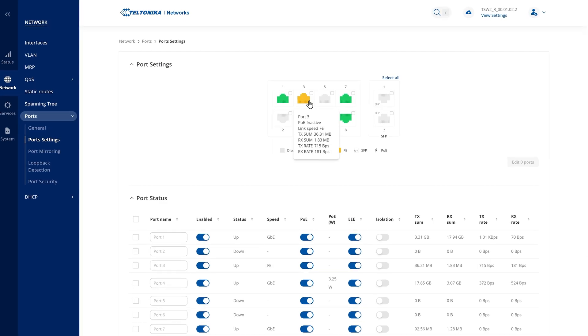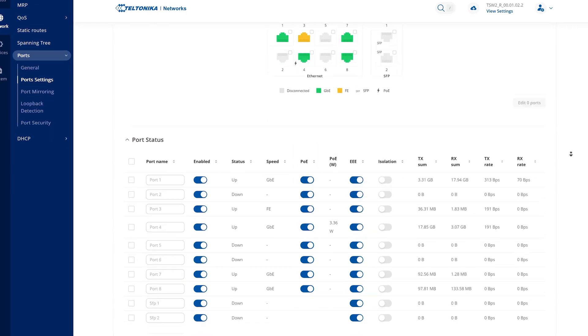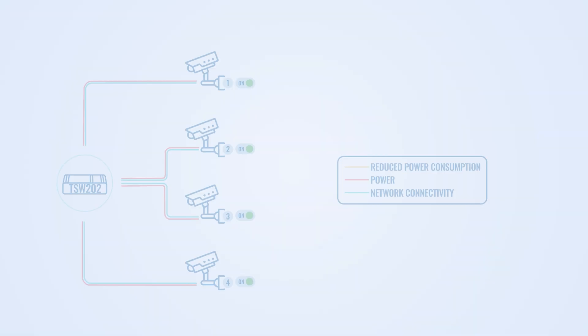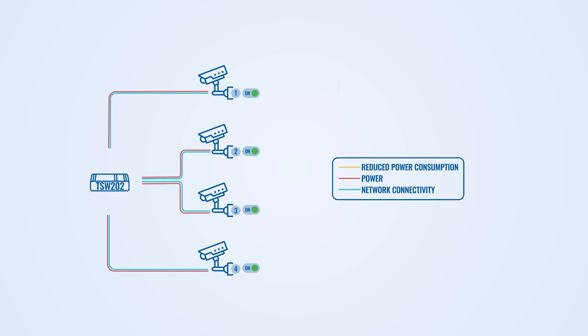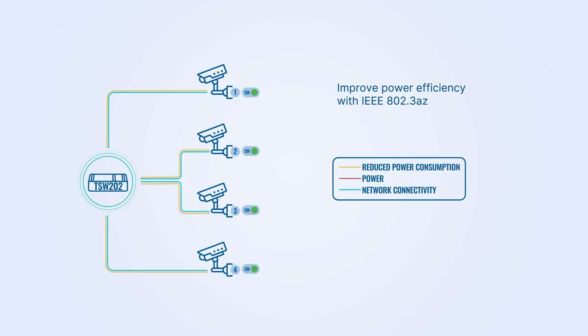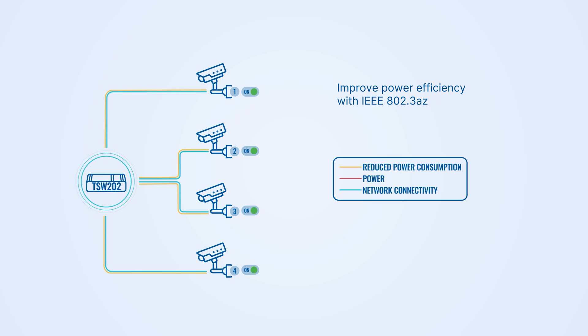If you would like to continuously track power consumption to identify and address issues, you can use power monitoring. With managed switches like RTSW202, you also attain capabilities to improve power efficiency with IEEE 802.3AZ, which can reduce power consumption during low data activity periods.